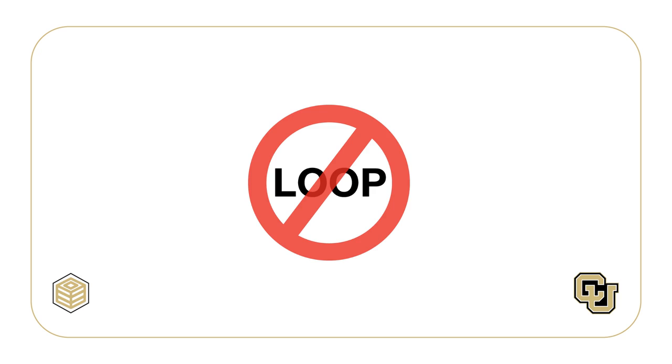Non-procedural database languages do not have looping statements, such as the statements for, while, and so on, because only the parts of a database to retrieve are specified. Non-procedural access can reduce the number of lines of code by a factor of 100 as compared to procedural access. Because a large part of business software development involves data access, non-procedural access can provide a dramatic improvement in software productivity — two orders of magnitude, or 100 times.